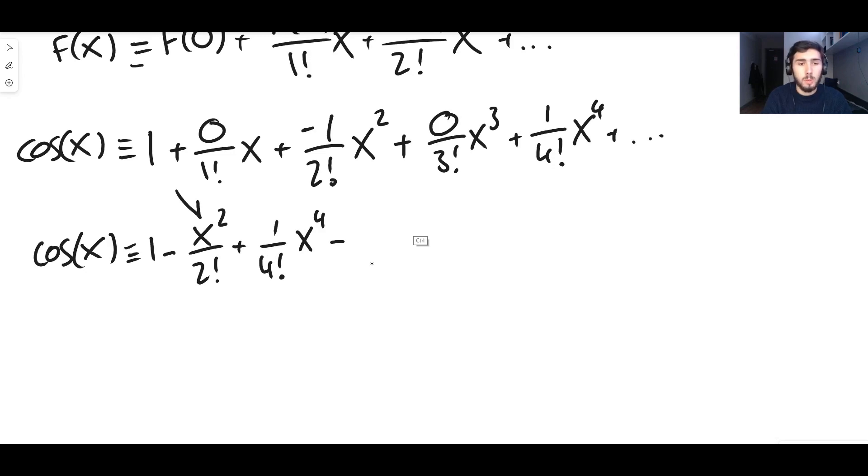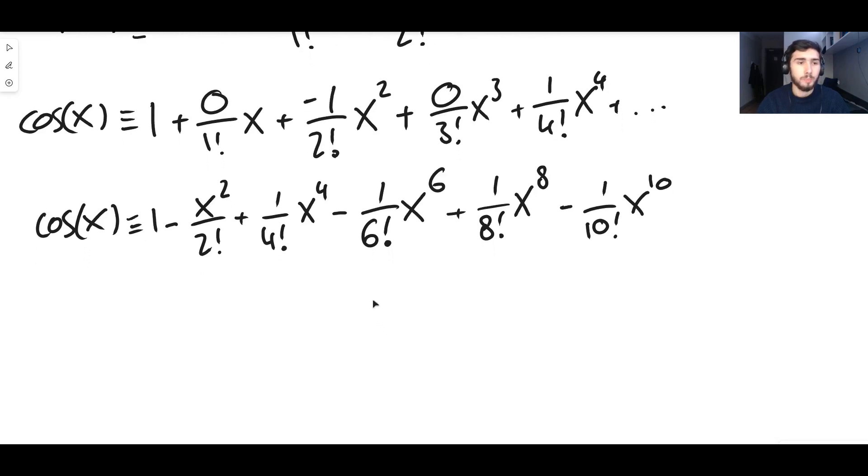So two, four, the next term is going to be six. So it's one over six factorial x to the six. Next term is going to be plus one over eight factorial x to the eight minus one over ten factorial x to the ten, etc. It's the even numbers. Sine, notice, was the odd numbers. Cos is the evens. So it's all of the even numbers, x squared, x to the four, x to the six, divided by their corresponding factorial. So two factorial, four factorial, six factorial, eight factorial, etc.